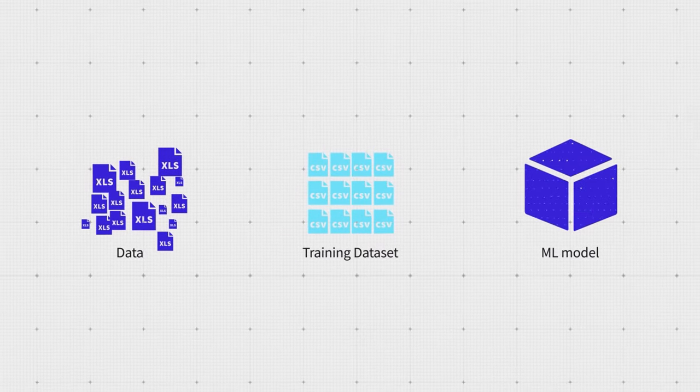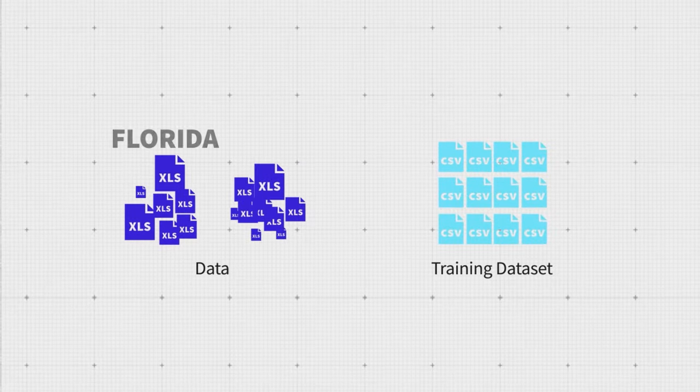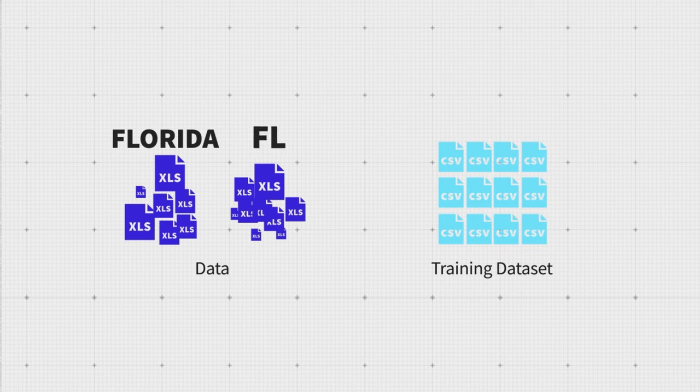In addition to that, you should make all data instances consistent throughout the datasets. Say, a state in one system could be Florida. In another, it could be FL. Pick one and make it a standard.